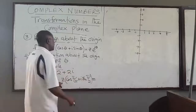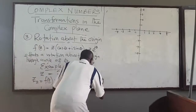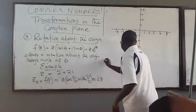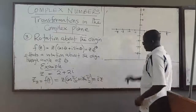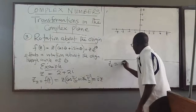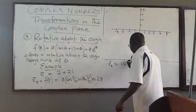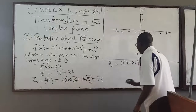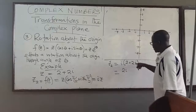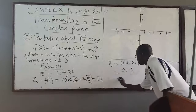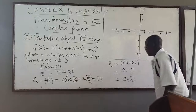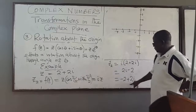So z2 equals i multiplied by z. We said z is 2 + 2i, so that gives us 2i·1 plus i·2i, which is 2i plus 2i² = 2i − 2. So z2 equals −2 + 2i. This is the transformed point, or vector.